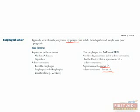You can remember the various risk factors for esophageal cancer with the mnemonic 'SAC on a BED,' which stands for squamous cell carcinoma, whose risk factors include alcohol, achalasia, and cigarettes. Meanwhile, adenocarcinoma's risk factors include Barrett's esophagus, esophageal webs, esophagitis, and diverticula.